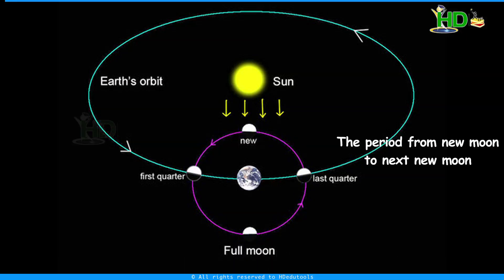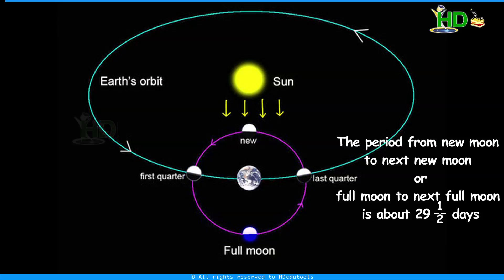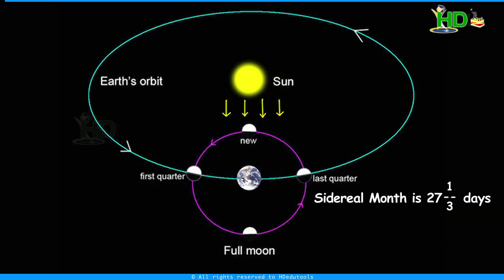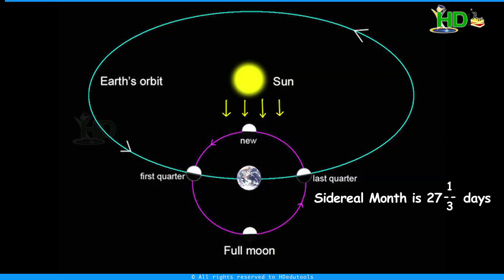The period from new moon to next new moon, or full moon to next full moon, is about 29 and one-half days. This is the time taken by the moon to complete one revolution around the earth with reference to the sun. This time is called the synodic month. The sidereal month is 27 and one-third days, and the synodic month is 29 and one-half days.